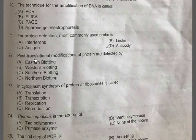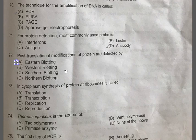Question 72: Post-translational modification of proteins are detected by — A: Eastern blotting, B: Western blotting, C: Southern blotting, D: Northern blotting. The correct option is A, Eastern blotting. Post-translational modification means the addition of special groups like lipids, phosphate, and glycoconjugates to the peptide.